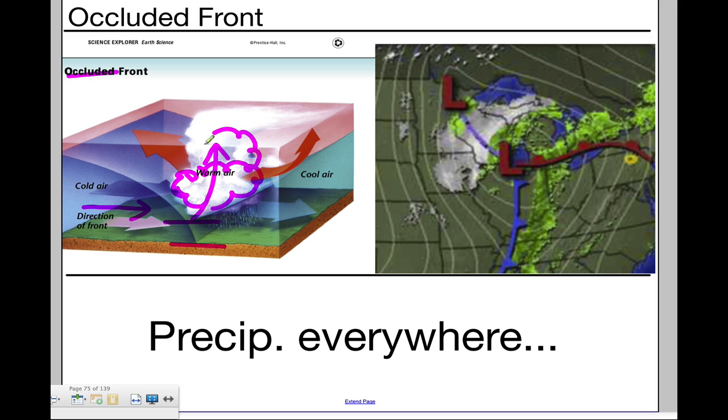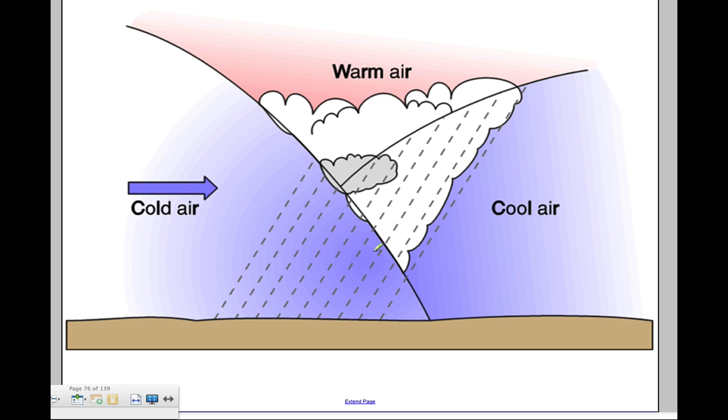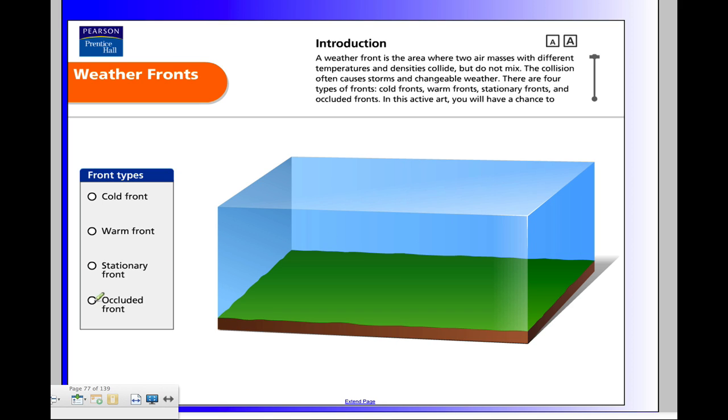Big, long areas of rain will form. And on the map, we'll draw that occluded front either as a purple line on some maps, or a line with both circles and triangles. This is another image showing the same idea. Cold air is pushed in so far that it's caught up to another batch of cold air, also moving in the same direction, just a little slower. And all the warm air is being pushed up high into the atmosphere.